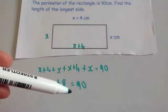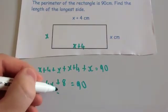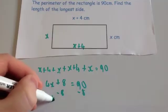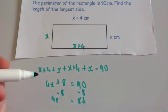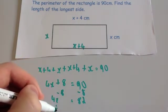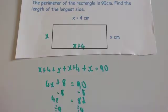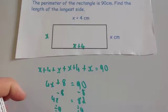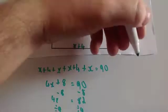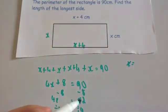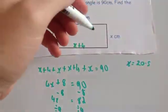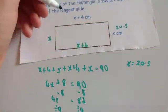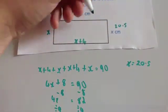So 4x plus 8 equals 90. Take away 8 from both sides, giving 4x equals 82. Then divide both sides by 4. Half of 82 is 41, and half of 41 is 20.5. So x equals 20.5, meaning the short side is 20.5cm. The long side is x plus 4, which is 24.5cm.